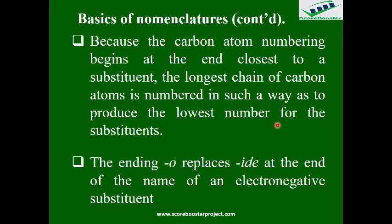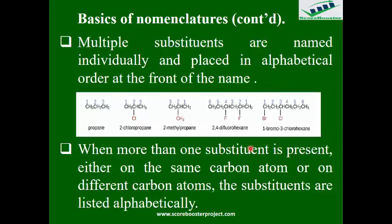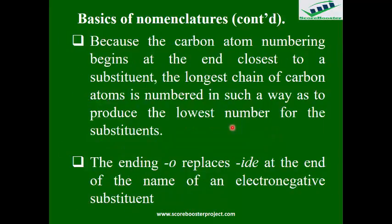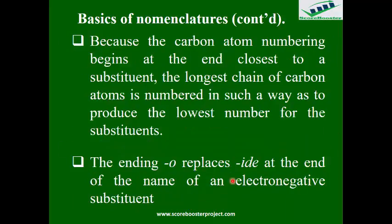The number of substituents of the same type is indicated by prefixes: di- for two, tri- for three, and so on. For example, difluoro or trifluoro if the substituents are the same. If they are different types, you treat them according to alphabetical order. An alkyl substituent contains one less hydrogen than the corresponding alkane — so methane becomes methyl, ethane becomes ethyl. The name of an alkyl group is obtained by dropping the suffix -ane and replacing it with -yl.